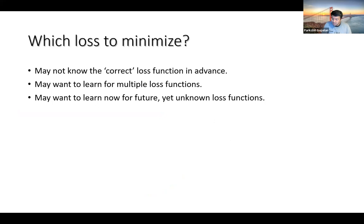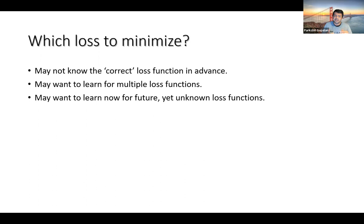Now let's go back to the question: how do we decide what loss to minimize? What if we don't know the correct loss function in advance, or we want to do learning for a large class of loss functions like all LP losses? The point is that you have the data right now, you do your learning, and what the right loss function will be may only be known to you in the future.